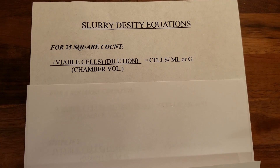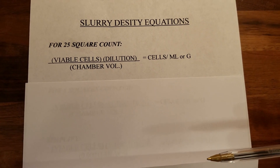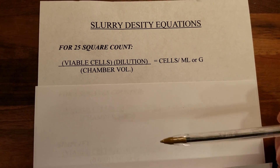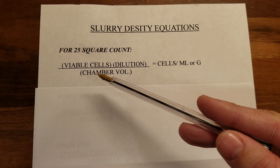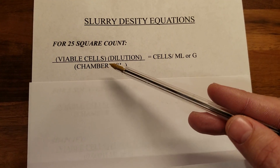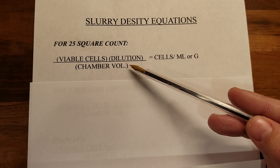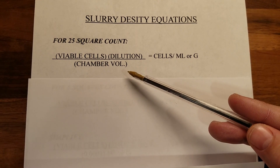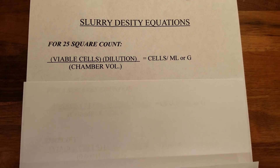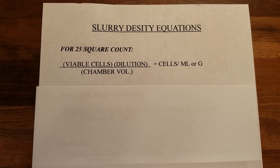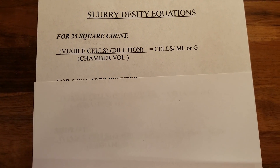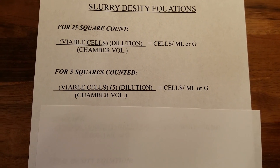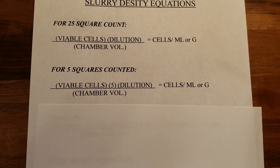The first equation is for if you count all 25 squares on the hemocytometer: take the number of viable cells counted in all 25 squares, multiply by the dilution rate, and divide by the chamber volume expressed in milliliters or grams. That's not really common though — usually as brewers we like to make things easy, so we don't count all 25 squares; we just count five squares: the corners and the middle.